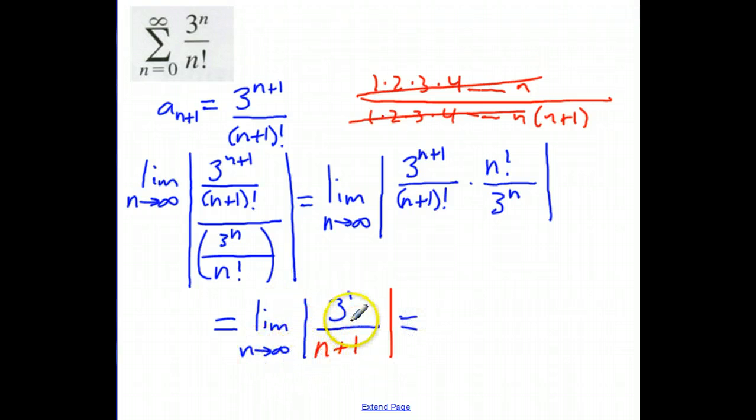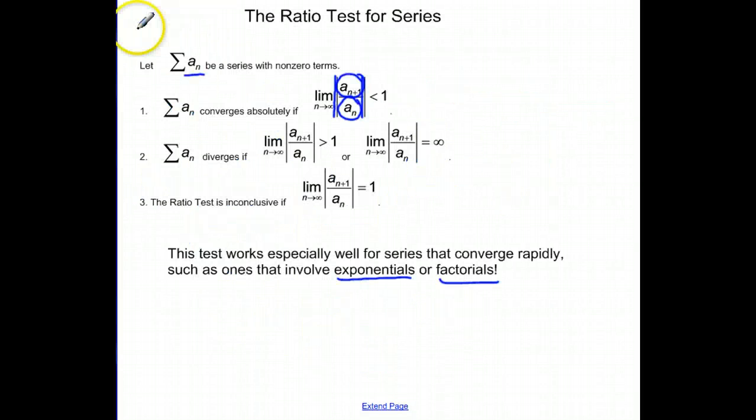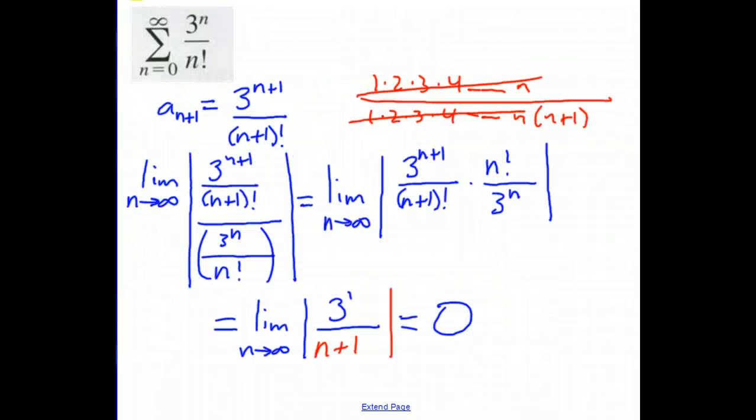So this is an easy limit to take. The limit as n approaches infinity of 3 over n plus 1 is 0. Well, if this limit of this ratio is less than 1, which ours is, we know it converges absolutely. So we've just proven that this series converges.